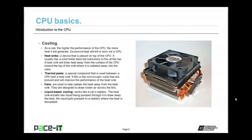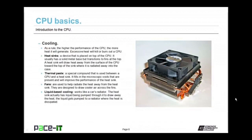Before we leave CPU basics, let's talk about cooling. As a rule, the higher the performance of the CPU, the more heat it will generate. Excessive heat will kill or burn out a CPU — heat is your enemy. To combat that, there are heat sinks. A heat sink is placed on top of the CPU, usually with a solid metal base transitioning to fins towards the top. It draws heat away from the CPU surface towards the top of the sink where it is radiated away. To improve heat sink efficiency, we use thermal paste — a special compound between the CPU and the heat sink that fills in microscopic voids and improves the connection.